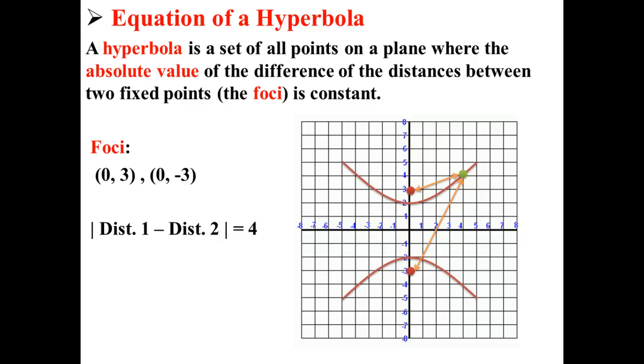So if we select any point on the curve, for example here we've selected the green point, its distance from point one minus its distance from point two, if we take the absolute value, it will be equal to four for this specific hyperbola.